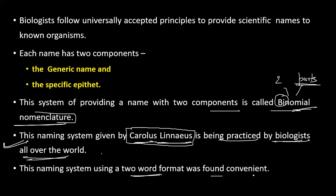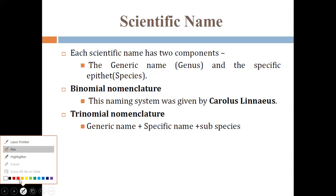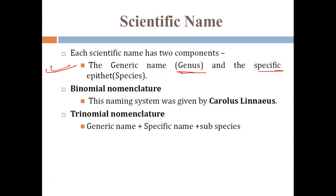This naming system uses a two-word format — genus and species. Each scientific name has two components: the generic name represents the genus, and the specific name represents the species. Together these two parts constitute binomial nomenclature.